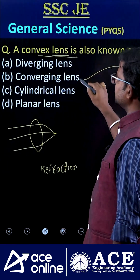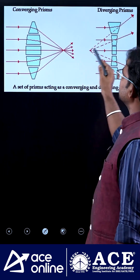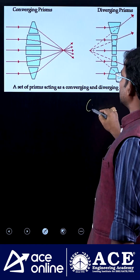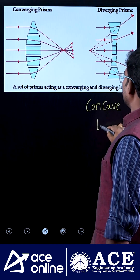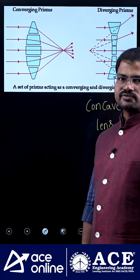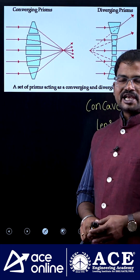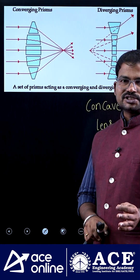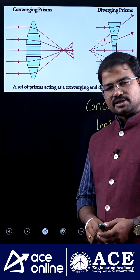That's why convex lenses are also called converging lenses. What about diverging lenses? That's nothing but a concave lens. Now here's a question for you: what is the optical power of a convex lens — is it positive or negative? If you know the answer, please comment. Thank you.